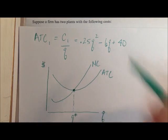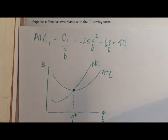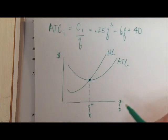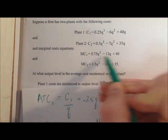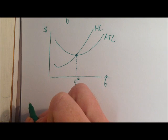So we're just going to look for the point at which marginal costs equal average total costs. We just found our average total costs, and the problem gives us our marginal costs.